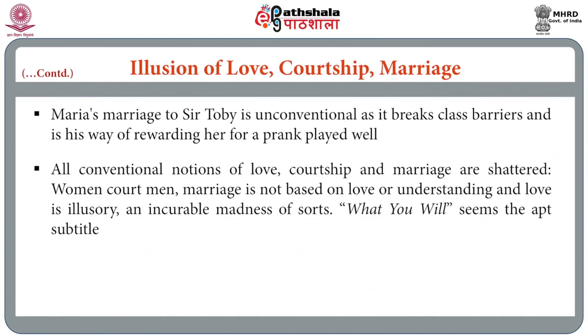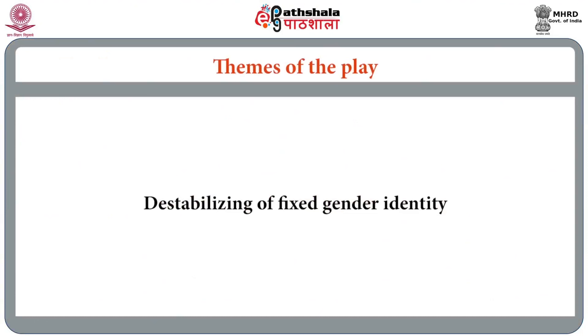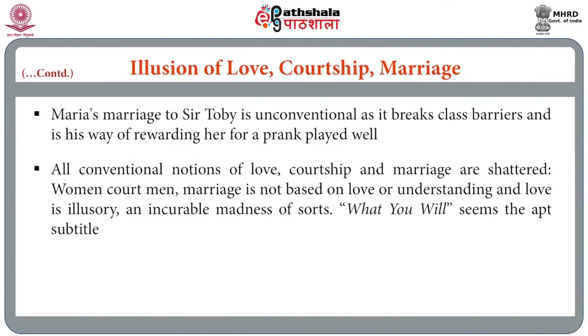Within this text there is also the question of gender identity. We should never forget that during Shakespeare's time young men or boys played the roles of women. Viola in the play is a young woman who dresses up as a young man and goes to woo another young woman — a destabilizing of fixed gender identity. You have women wooing other women, women dressed as men wooing other women, and people forming friendships based not upon gender but upon appearance. There is a great deal of destabilizing of the idea of gender itself, and marriage is based not upon love or understanding but upon love which is almost like madness.